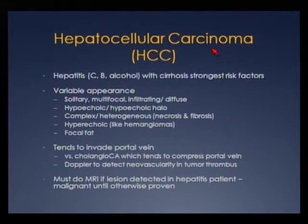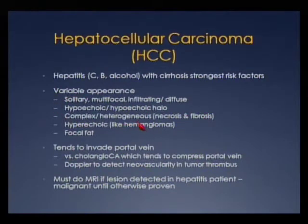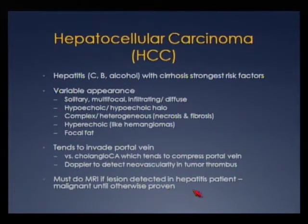This busy slide illustrates the importance of recognizing potential foci of hepatocellular carcinoma. The biggest risk factors are hepatitis and cirrhosis. HCC can be very variable in appearance — solitary, multifocal, or infiltrating. Infiltrating types are often difficult to see by ultrasound or MRI. It can have variable echogenicity or be uniformly hypoechoic like hemangiomas, and can contain focal fat. If there's vascular involvement, HCC tends to invade the portal vein versus cholangiocarcinoma, which compresses the portal vein. Apply Doppler to look for neovascularity indicating tumor thrombus. Any lesion detected in a hepatitis or cirrhosis patient must have MRI — these lesions are malignant until proven otherwise.